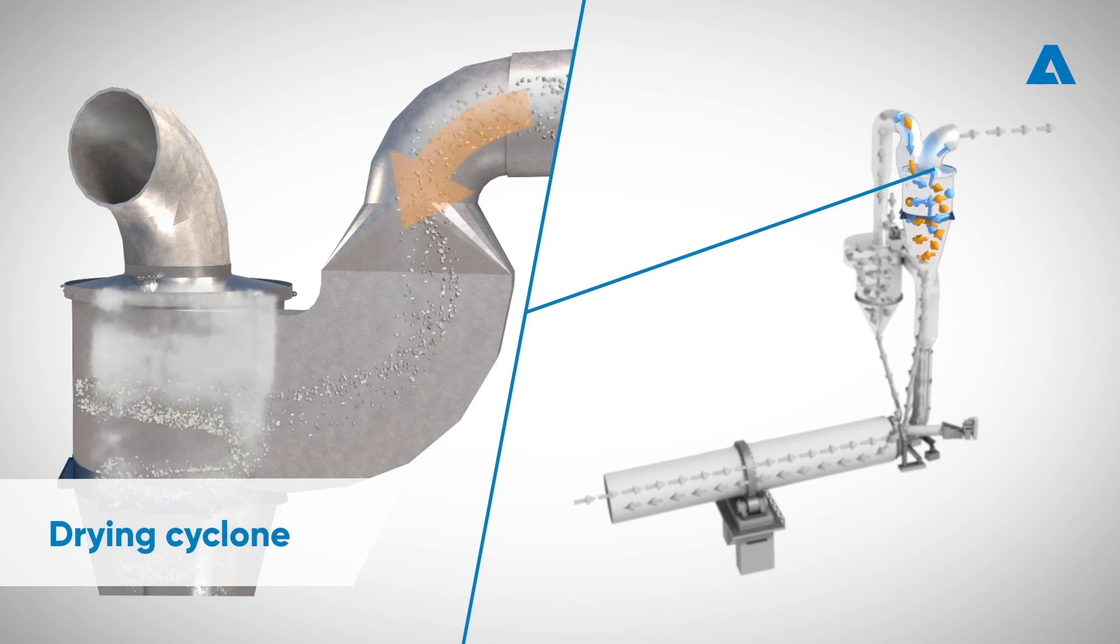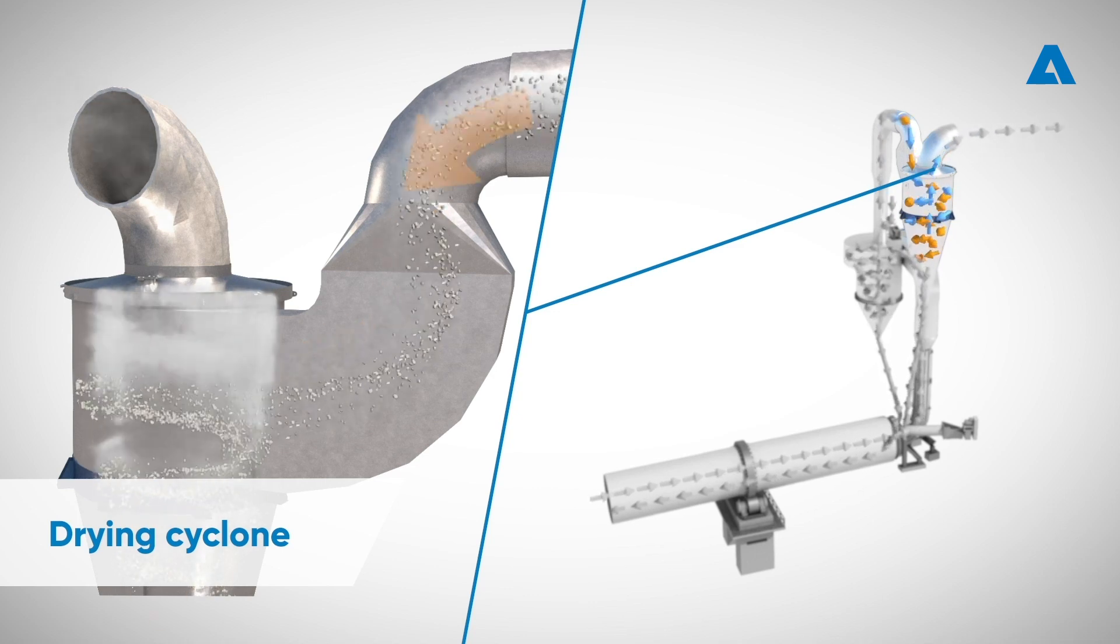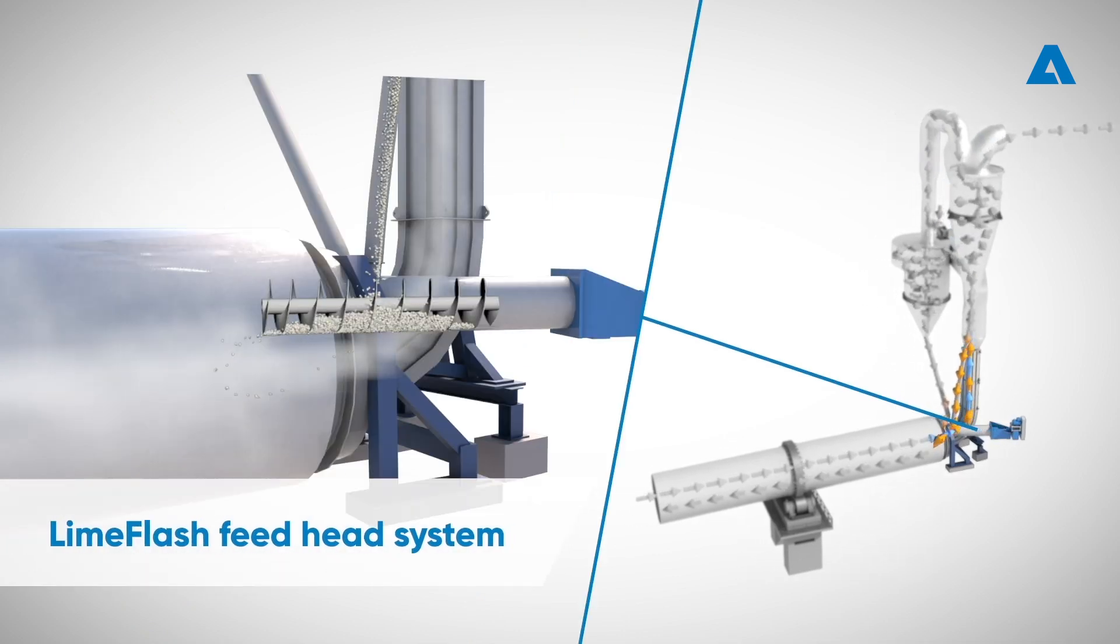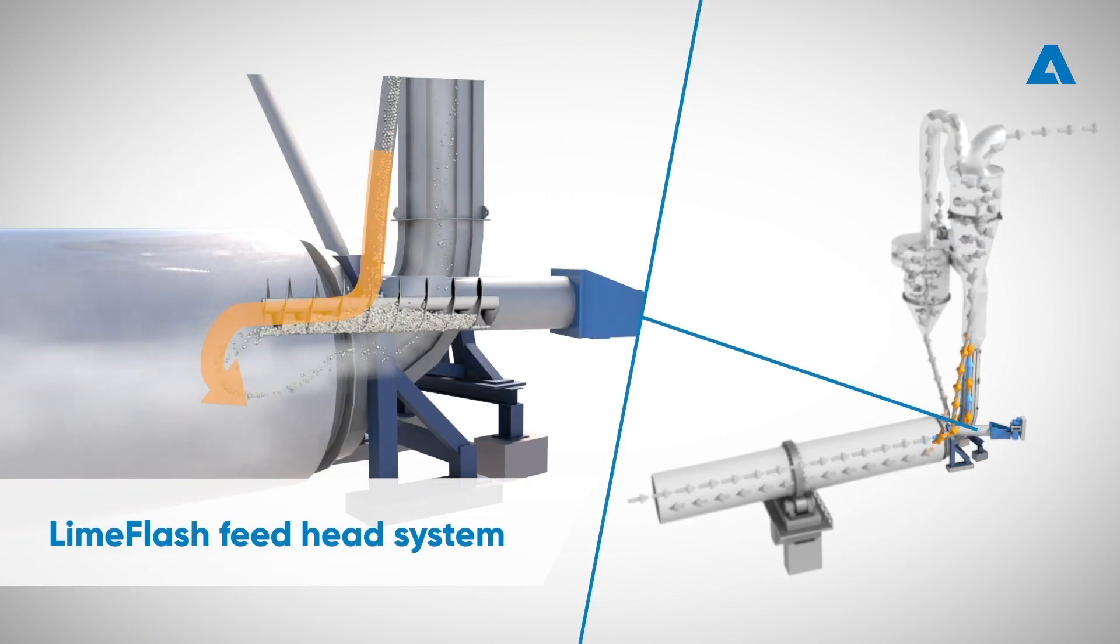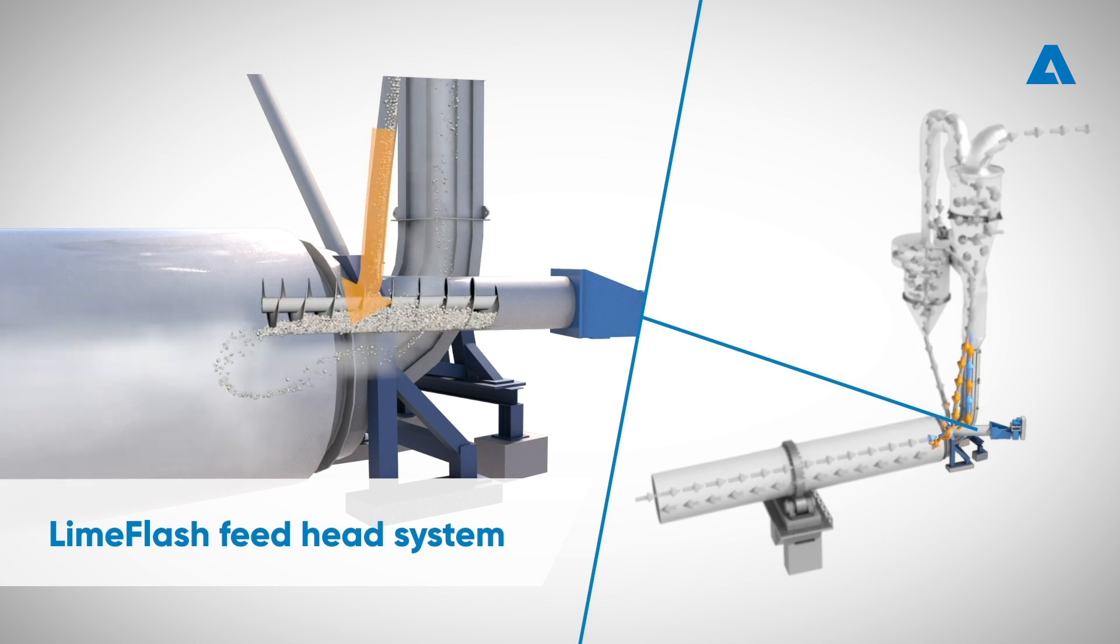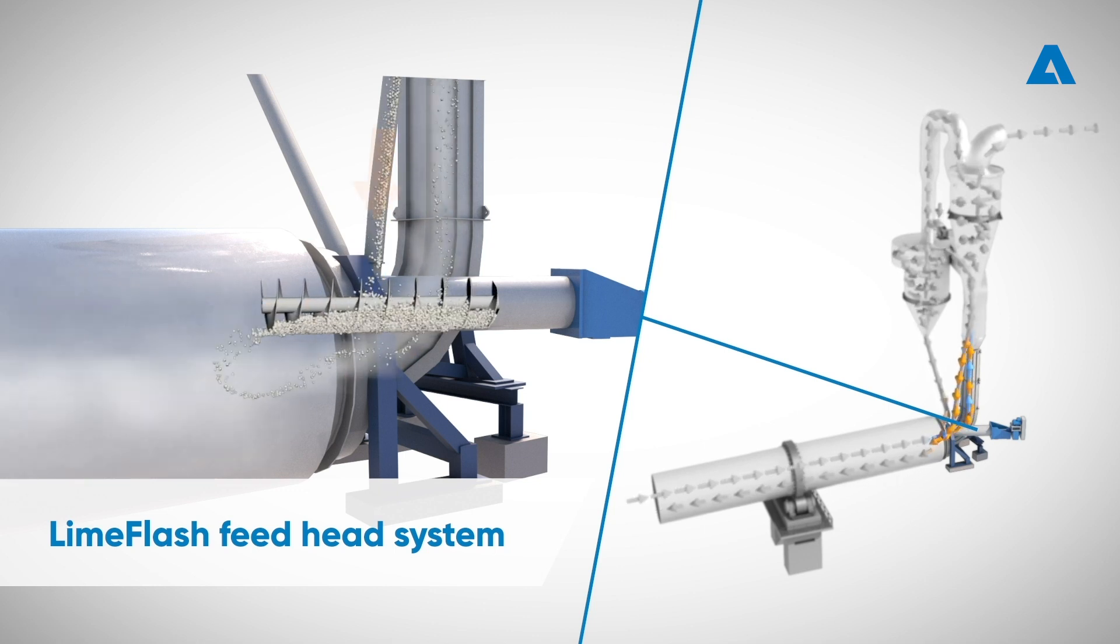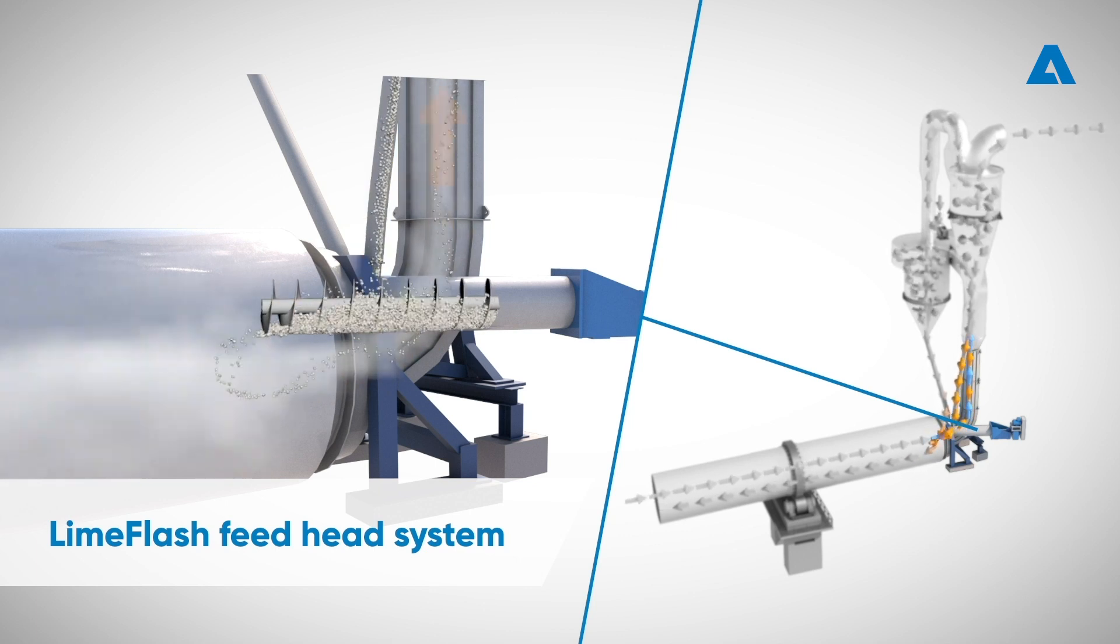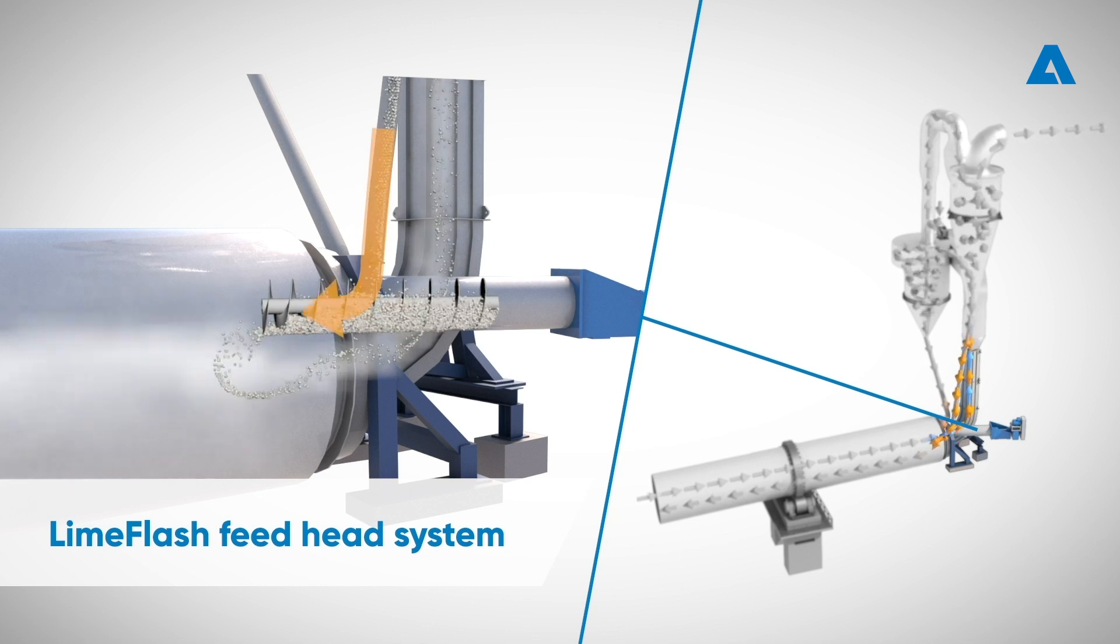The drying cyclone separates the dried lime mud from the flue gas. The lime mud then flows by gravity through a chute into the preheating feed screw, which feeds the dried mud into the flue gas stream again in the LimeFlash H lime kiln feed end. Lime mud is now further heated to about 500 to 600 degrees Celsius and carried with the flue gas to the preheating cyclone.